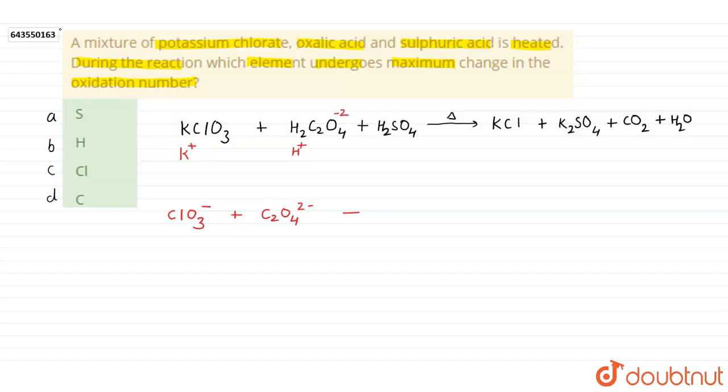Reaction is carried out in acidic medium. I ignore this H2SO4 and here also K plus 1, that's why ClO3 is minus 1, plus here K plus 1 and SO4 minus 2.